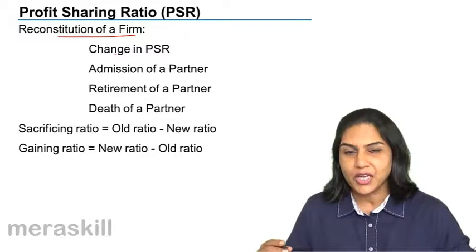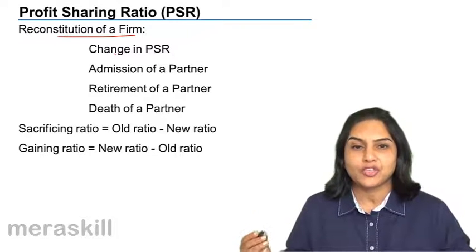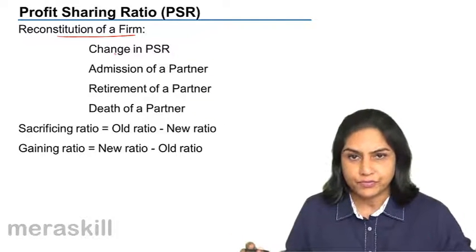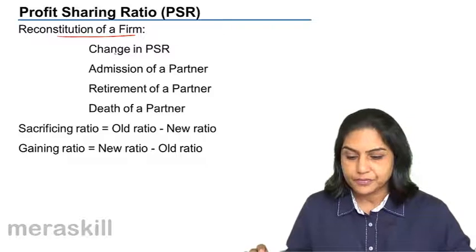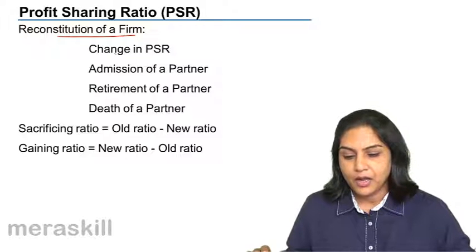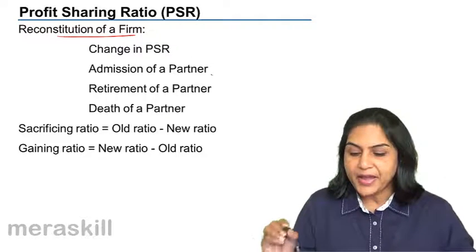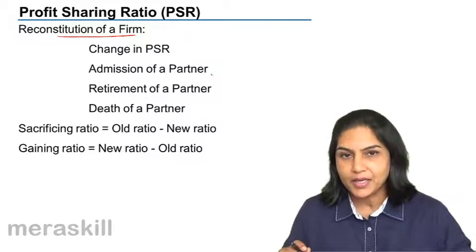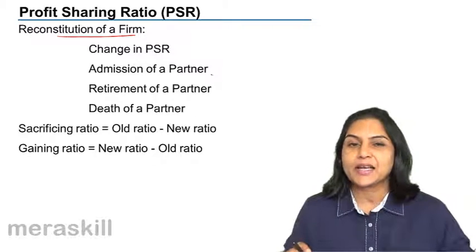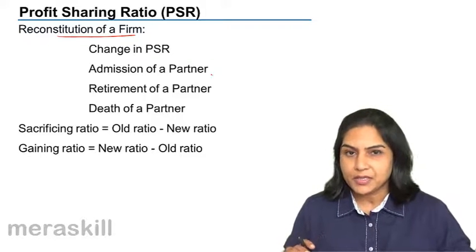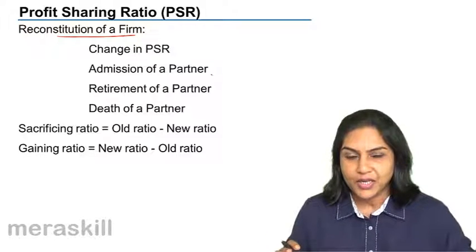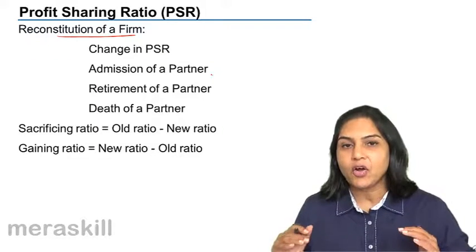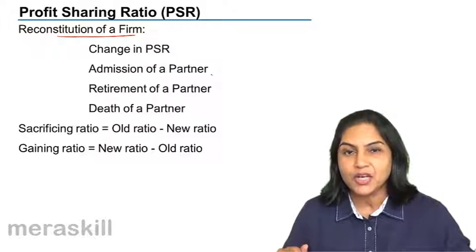For example, three people were equal partners. Now maybe they have changed their ratio to 5:3:2. Similarly, in case of admission of a partner, when a new partner comes in, suppose there are two partners sharing profits equally — their ratio is half and half — a third partner comes in and all partners share profits equally.